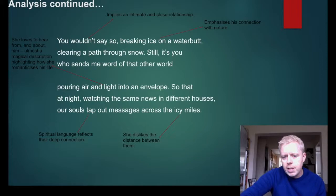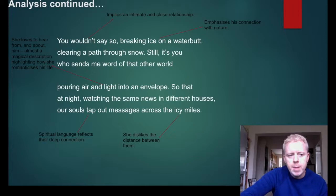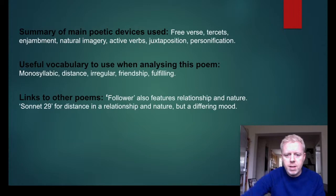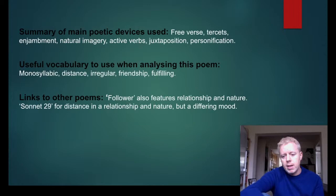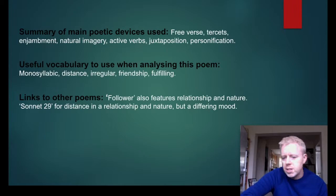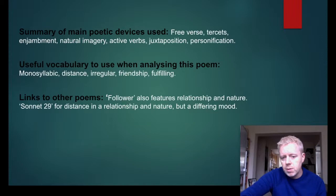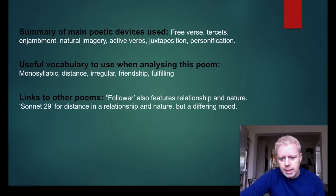It's not the most complex of poems, and it's slightly ambiguous in terms of whether it's a poem about friendship or a long-distance relationship — that's up to you to decide. There's plenty to analyze and prepare you for the comparative question on the exam. A summary of the poetic devices used: free verse, tercets, enjambment, natural imagery, active verbs, juxtaposition, and personification. Remember method and meaning — identify these techniques and compare them to the other poem, but also explore the meaning. Useful vocabulary includes monosyllabic, distance, irregular, friendship, and fulfilling.